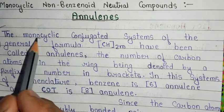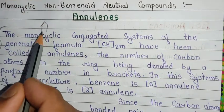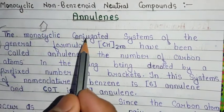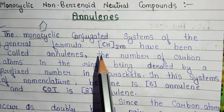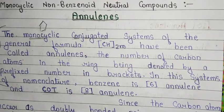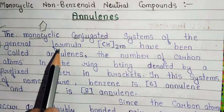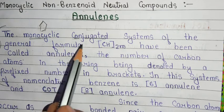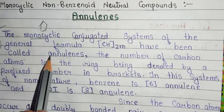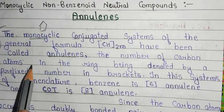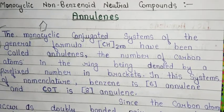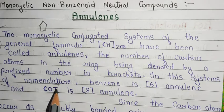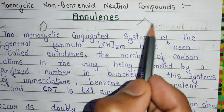Basically, annulins are monocyclic — meaning they are in ring form — and annulins are conjugated, meaning the pi bonds are in alternating positions. So compounds which show a conjugated system and are monocyclic have been called annulins. The number of carbon atoms in the ring is denoted by the prefix number in brackets. To understand the nomenclature of annulin we take the example of benzene.